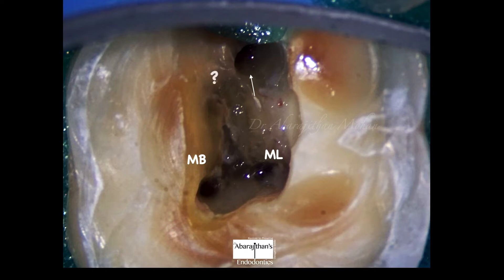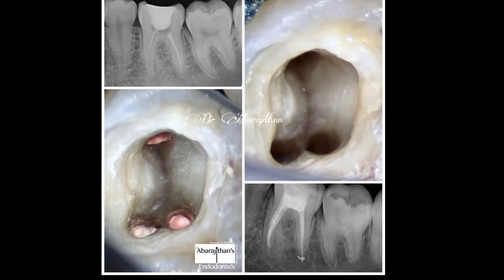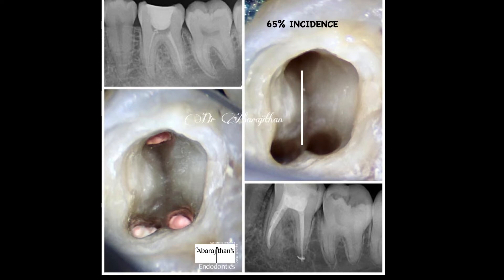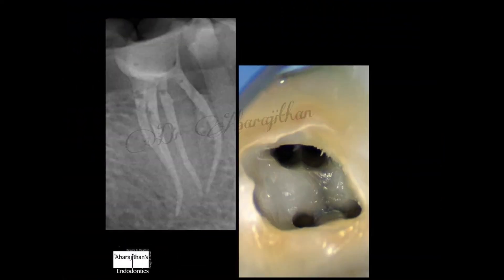In general, when there is a single distal canal in the mandibular first molar, it is often located exactly in between the two mesial canals, and the distal canal is much larger in size than the two mesial canals. The incidence of a mandibular first molar having a single distal canal is almost 65%, meaning two out of three mandibular first molars you treat are very likely to have just a single distal canal, which can be confirmed by its location and size.